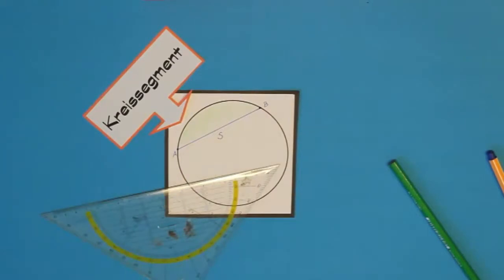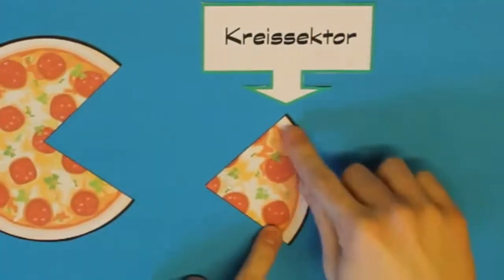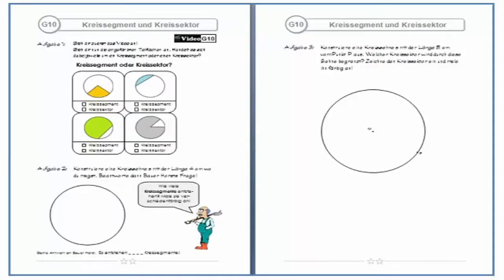Also, ihr habt in diesem Video jetzt da zwei Teilflächen des Kreises kennengelernt. Als erstes der Kreissektor und als zweites das Kreissegment. Mit diesem Wissen könnt ihr jetzt das Übungsblatt G10 bearbeiten. Ich wünsche euch viel Erfolg.